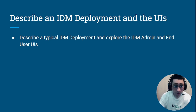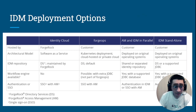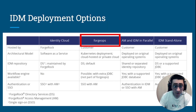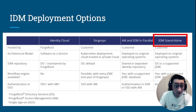The first section is more about describing identity management deployment and the UI. When you embark on IDM and decide when to deploy, you have got several options: identity card, ForgeOps (which means ForgeWalk DevOps, providing resources to help you deploy on Kubernetes), AM and IDM in parallel, and IDM standalone. In this sharing, we will focus more on the IDM standalone since that is what the training session focuses on.